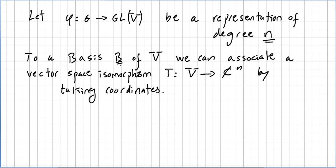To a basis B of V, so a basis for the vector space, we can associate a vector space isomorphism from the vector space to the complex n space simply by taking coordinates. We can take coordinates, of course, from the basis.